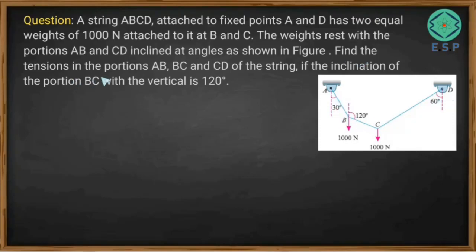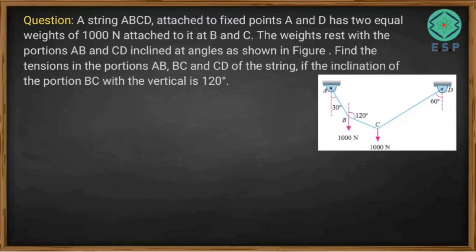We need to find the tension in portions AB, BC, and CD of the string. The inclination of portion BC with the vertical is 120 degrees. This is a problem of coplanar concurrent forces, so we'll find the tension in each portion of the string.